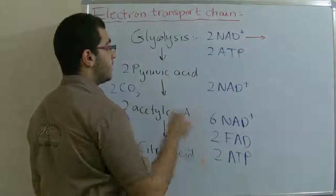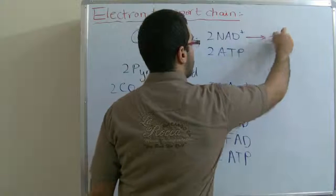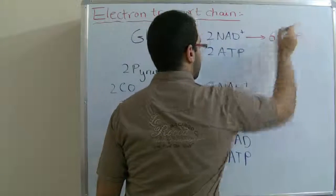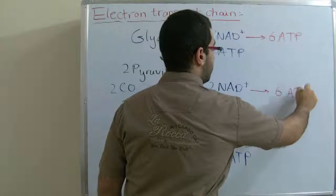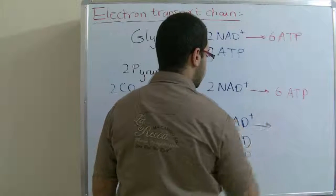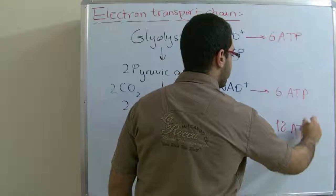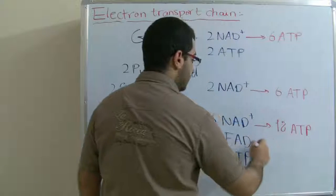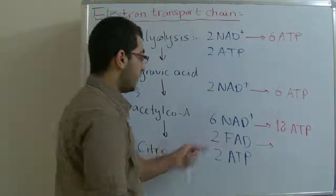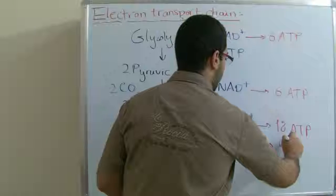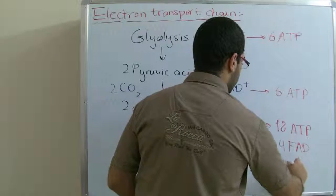We convert these. Two ATP, we all said that one NAD plus gives three ATP molecules so two gives six ATP, two NAD plus six ATP, six NAD plus by three gives 18 ATP, two FAD we said that the FAD gives two so here we have four ATP, and two ATP molecules here.